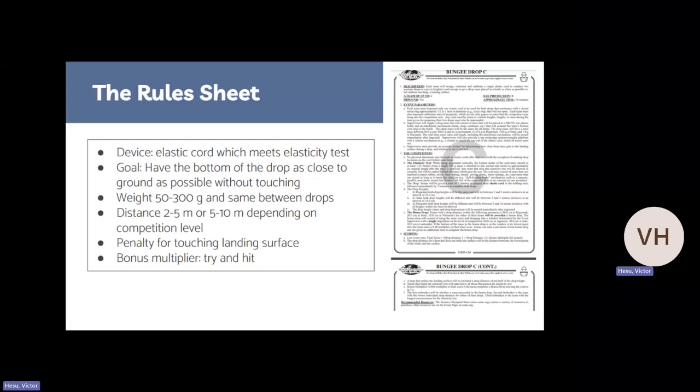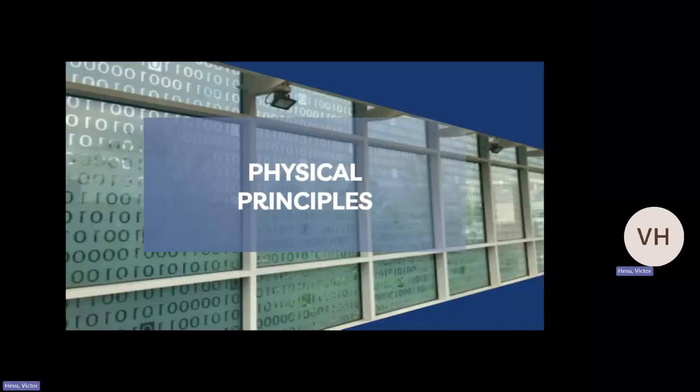There is a hard penalty for touching the landing surface. This year, there is a bonus multiplier for getting within a certain distance to the landing surface. Given that, you're allowed to try another drop at a different height, or the same height, depending on the event supervisor. And if you're within a certain distance of the landing surface again, you get a multiplier.